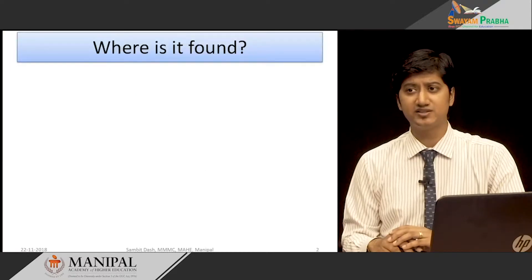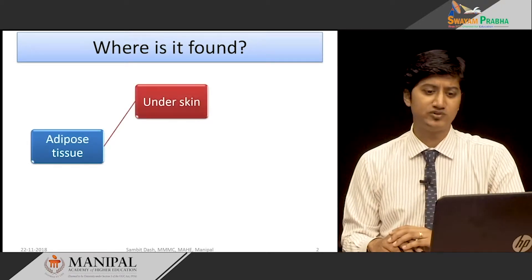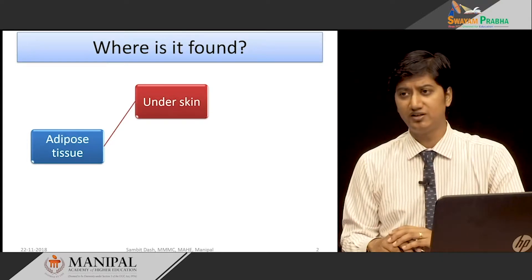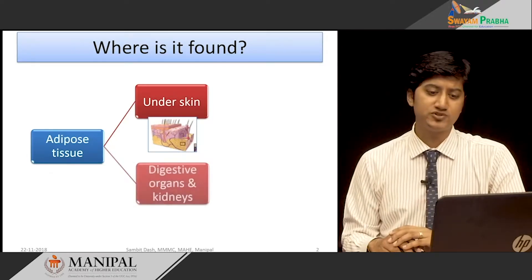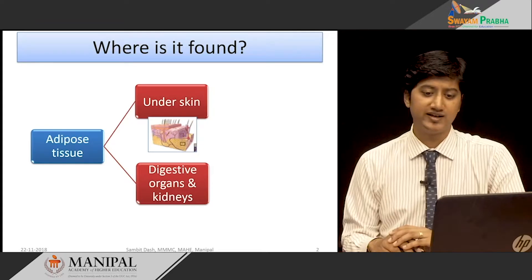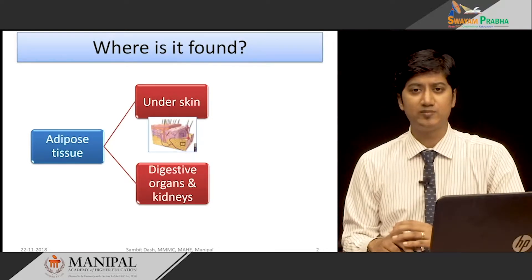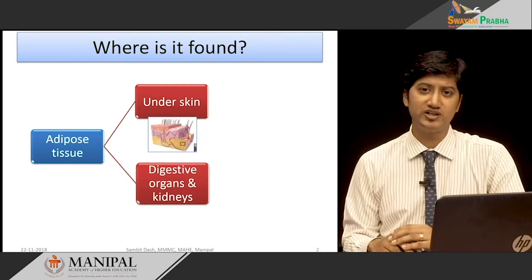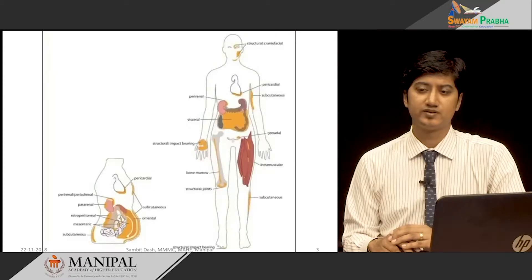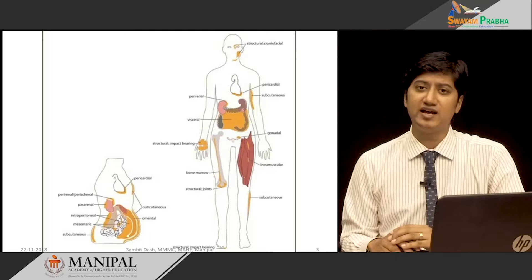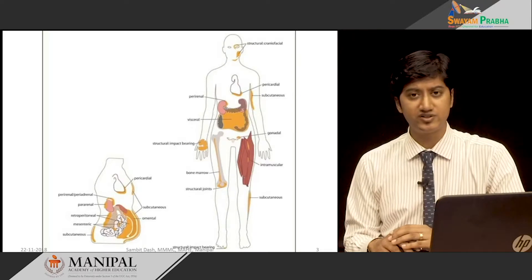Let us begin by asking: where is adipose tissue found? Adipose tissue is largely found in the subcutaneous region under the skin, and that comprises 80% of body fat. The adipose tissue around the digestive organs like stomach, intestines, and including kidneys comprises the intra-abdominal region, which makes up 20% of body fat. The majority is found in abdominal and scapular regions in the upper body, and gluteal and femoral regions in the lower body.